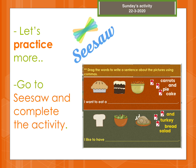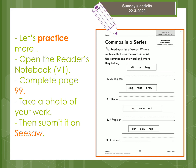Now it's time to go to CISO and complete the activity. I want you to drag the words to write a sentence about the pictures using commas. Look at the pictures, arrange the words in the correct order, and use the commas in between plus the word 'and' correctly. Then open the reader's notebook, volume one, complete page 99, take a photo of your work, and submit it on CISO.